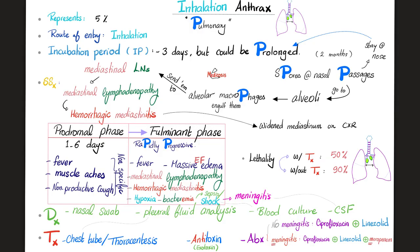Where should I take the sample from? Since the spore could be hiding in your nose, take it from the nasal passages. Since we can have pleural effusion, we need pleural fluid analysis. If you have sepsis, bacteremia, or septic shock — blood culture. If meningitis occurred — CSF analysis via lumbar puncture. Management: if there is pleural effusion, we need chest tube thoracostomy or thoracentesis. Since anthrax secretes a toxin, we need an antitoxin — and only exotoxins have antitoxins against them. Antibiotics: if no meningitis, cipro and linezolid. If there is meningitis, cipro and linezolid plus meropenem.